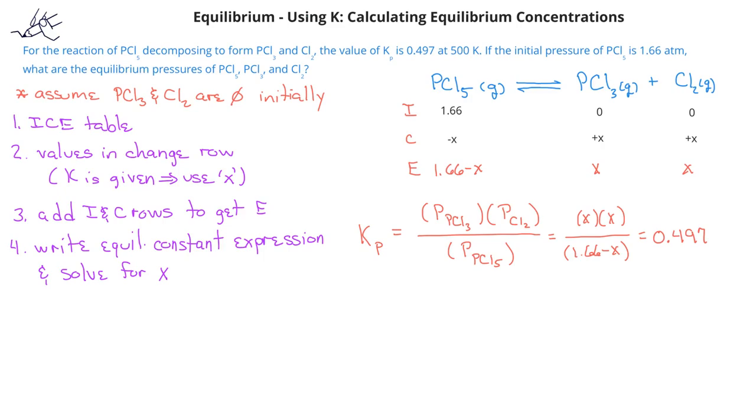Now that we've established the equilibrium constant expression is equal to the equilibrium constant, we can rearrange the equation to solve for X. When we do this and set the equation equal to 0, we get X squared plus 0.497X minus 0.825 equals 0. This is essentially a polynomial expression, and we can use a quadratic equation to solve for X.